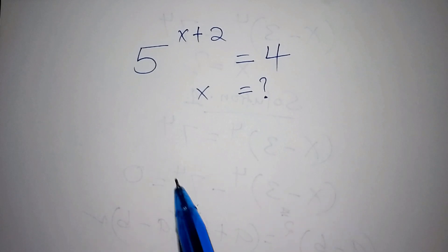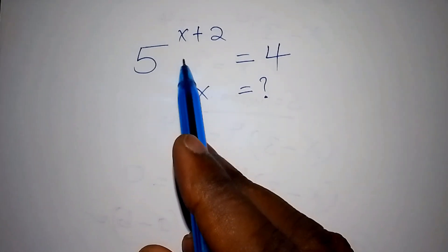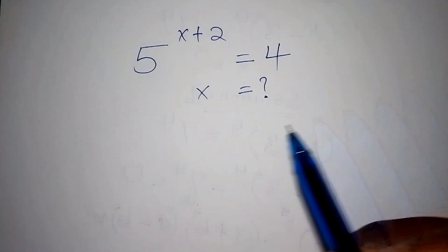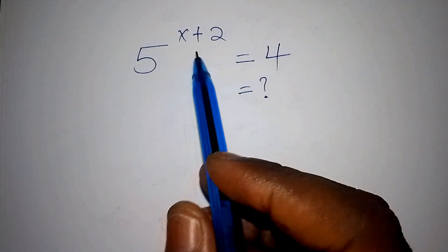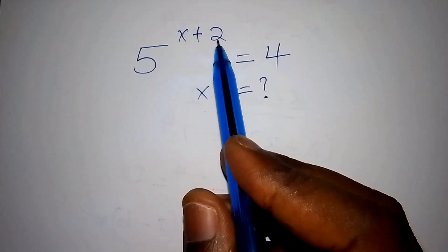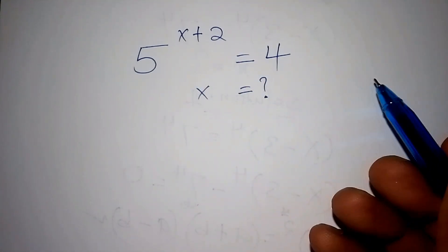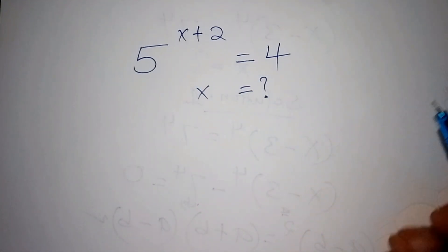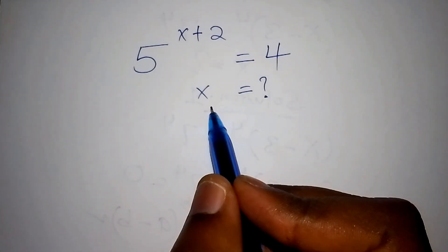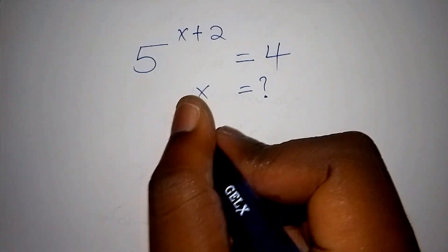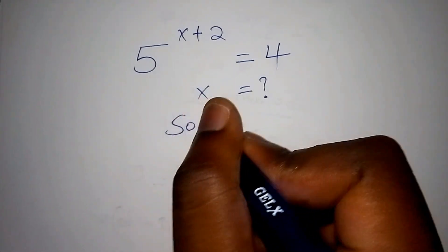Hello viewers, I want us to work out this maths problem within the shortest time possible. We have 5 to the power of x plus 2 is equals to 4. We are asked to find the value of x, so let's begin with the solution.